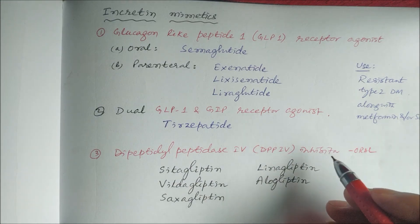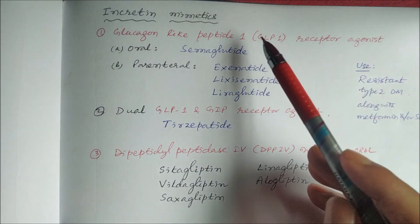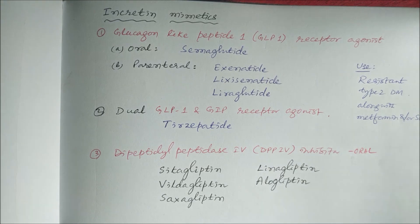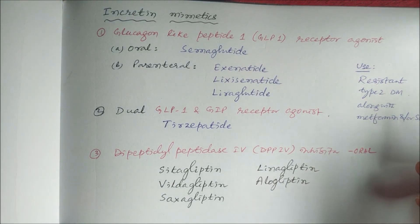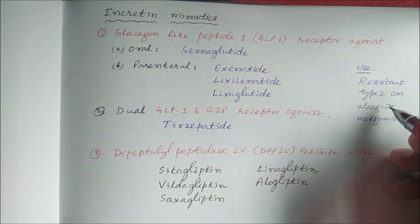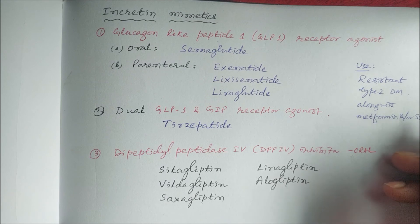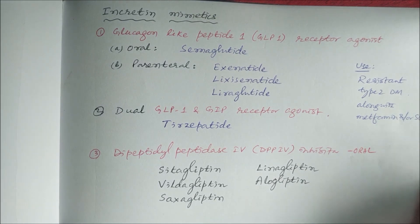All these DPP-4 inhibitors increase the levels of incretins like GLP-1 and GIP and decrease blood sugar levels. They can be used in resistant Type 2 diabetes mellitus along with metformin and/or a sulfonylurea like glimepiride. That is all about incretin mimetics.